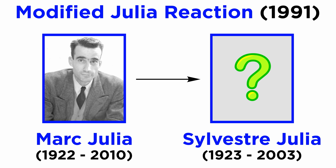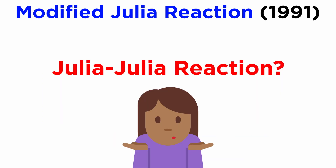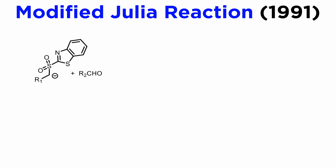In 1991, Mark Julia's younger brother Sylvester, also a chemist, reported an important modification of the Julia reaction, which eliminated the need for the reduction step. This extension is now called the modified Julia reaction — perhaps because referring to it as the Julia-Julia reaction may have seemed awkward — but the new procedure was definitely an important development.